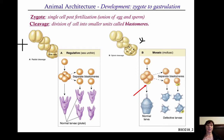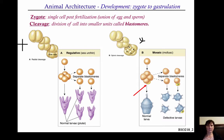You don't get fully formed adults — they end up dying. So you cannot split off the blastomeres if you have mosaic development. But if you have regulative development, if a blastomere happens to get peeled off, you'll get normal adults.